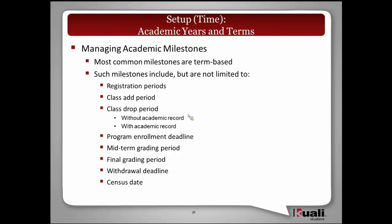Some examples of milestones include defining what your registration period looks like, your class add period, drop period — and we know there are multiple dates on a drop period, some with no impact to your academic record while others will. So that would be multiple dates. Also when your midterm grades are due, final grades, withdrawal deadline, and a census date. These are not all the examples; we just wanted to give enough to illustrate.